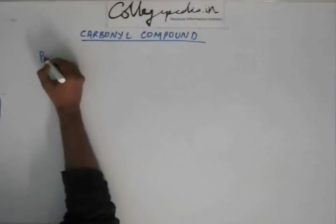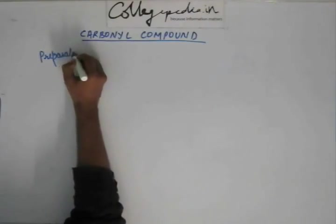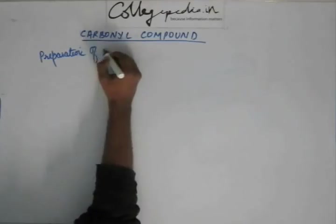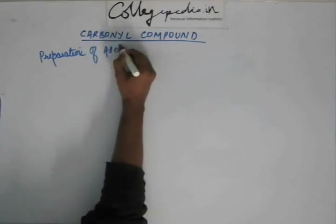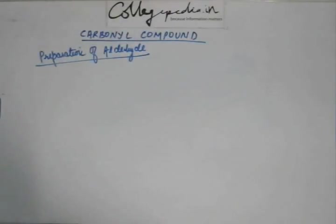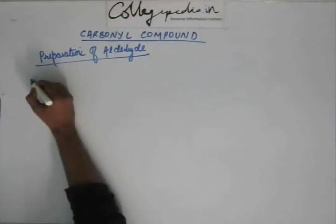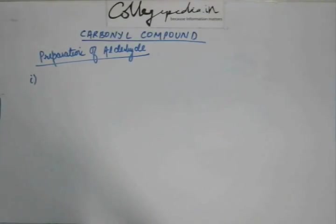We'll begin with the preparation of aldehyde. There are certain reactions we have already studied in the chapter on hydrocarbons, so we'll start with those for a quick recapitulation before moving to new reactions. One important common reaction we have studied is the reaction of alkene and alkyne — ozonolysis.